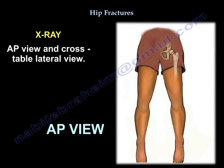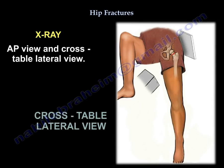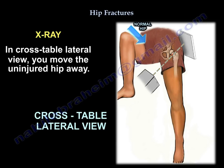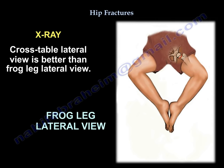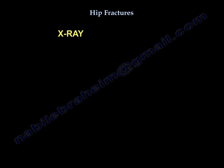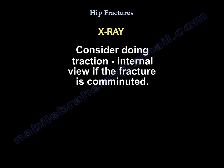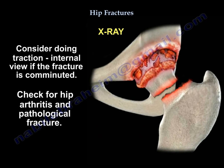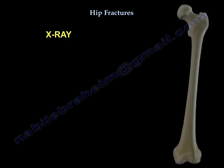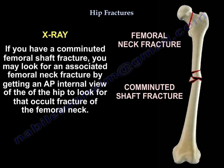X-rays: obtain an AP view and a cross-table lateral view. On the cross-table lateral, you move the uninjured hip away — the one you move is the normal hip. It is better than the frog leg lateral. Consider a traction internal rotation view if the fracture is comminuted. Also look for hip arthritis or pathological fracture. If you have a comminuted femoral shaft fracture, look for an associated femoral neck fracture by getting an AP internal rotation view of the hip to identify any occult fracture.